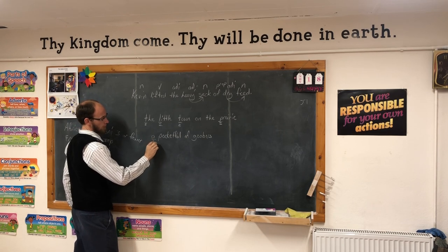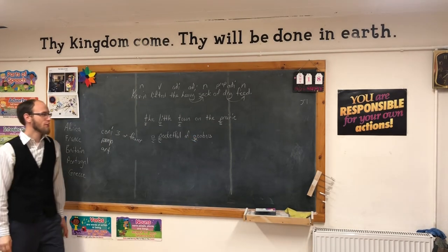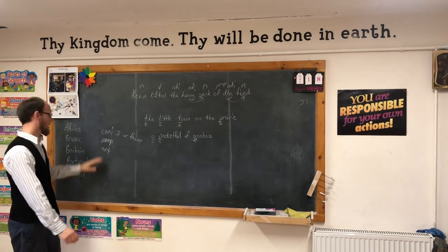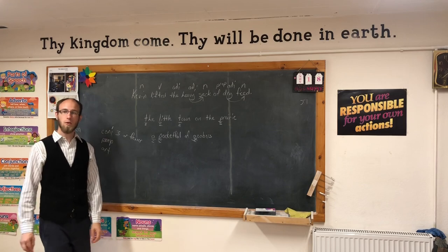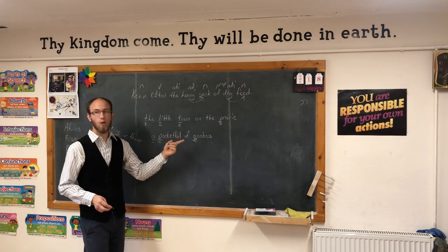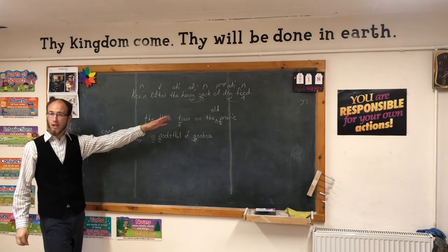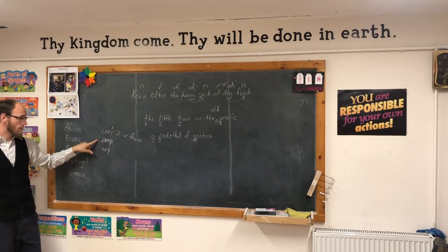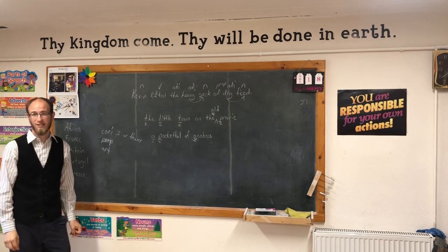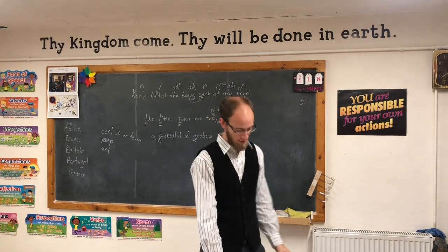Does 'A' get capitalized? Yeah. 'Pocket full'? Yeah. 'Of'? No. 'Goobers'? Yes — 'A Pocket Full of Goobers.' So capitalize the first and the last word, and the only words that don't get capitalized are three letters or fewer, and they need to be conjunctions, prepositions, or articles found in the middle of the title. Something like 'old' — only three letters, but it is not a conjunction, preposition, or article, so 'old' would also be capitalized.